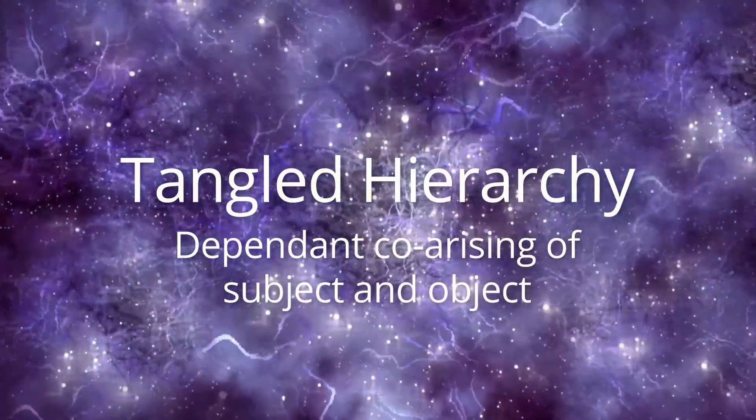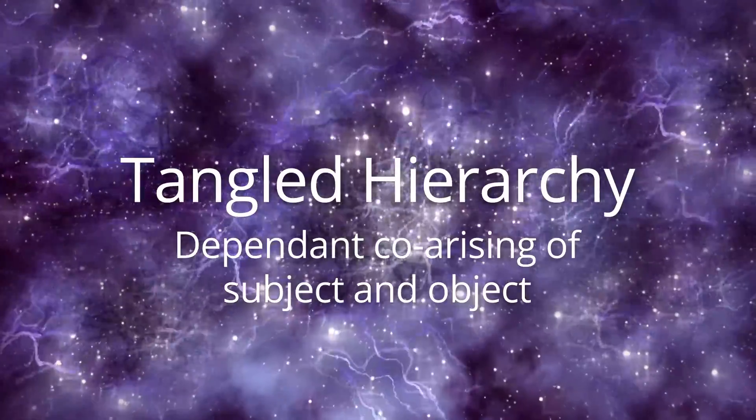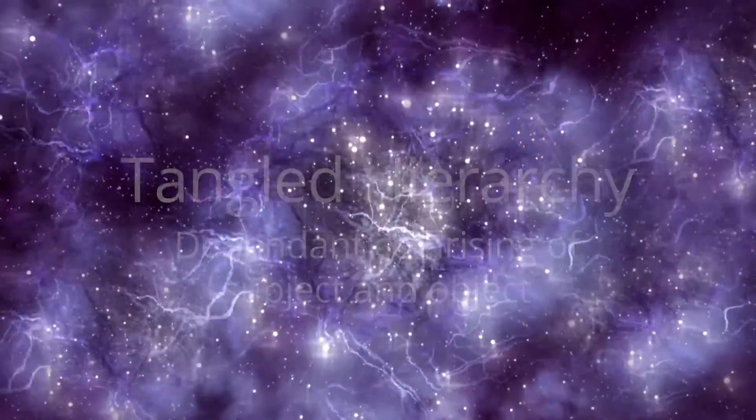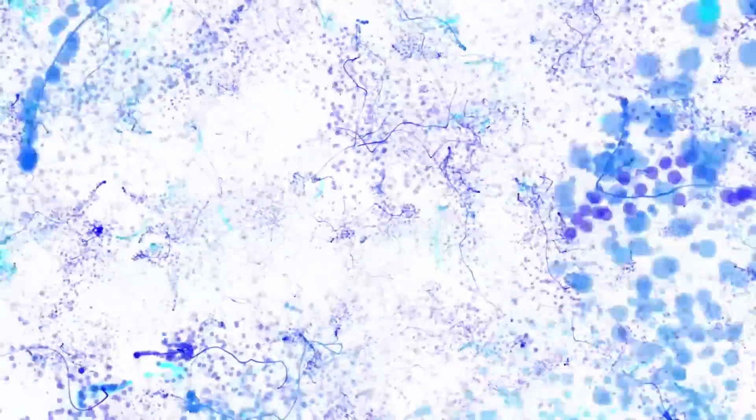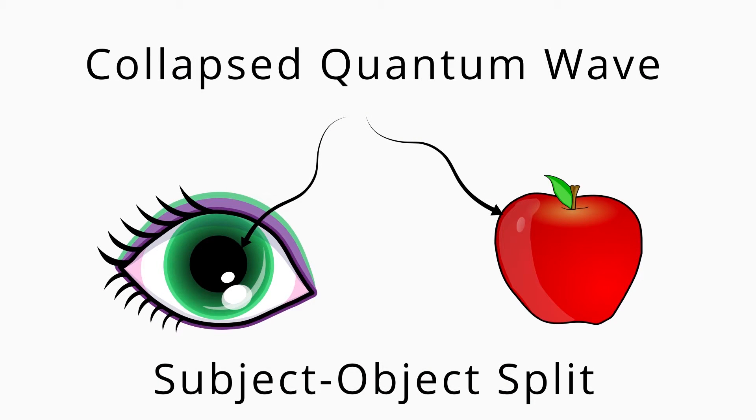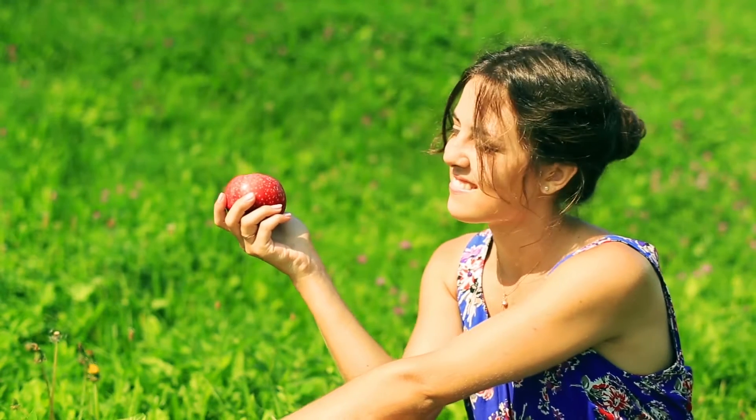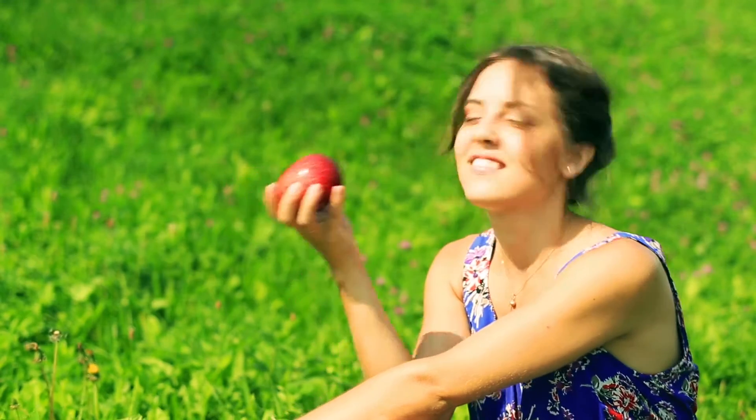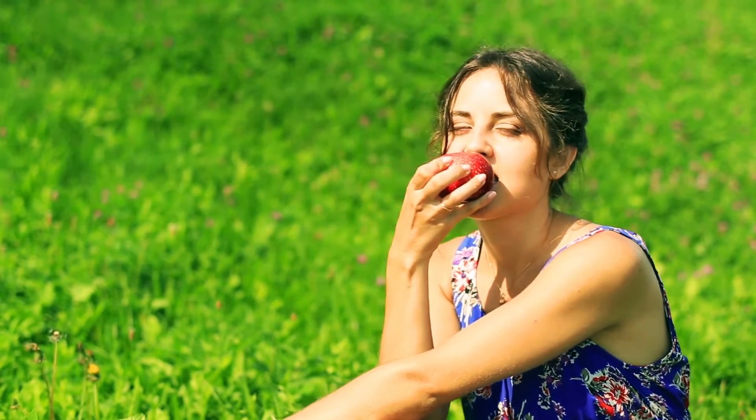Tangled hierarchy: dependent co-arising of subject and object. One of the surprising things in the event of quantum collapse is that when you look, not only does an object appear in consciousness, but also a subject appears looking at the object. Quantum collapse produces the awareness of a subject-object split, the experience of a subject looking at an object. This can be understood by examining the role of the brain in making a conscious observation.